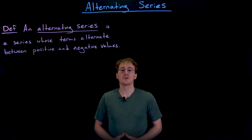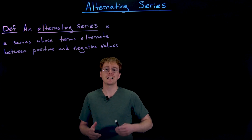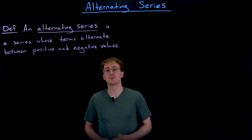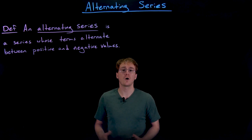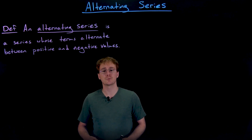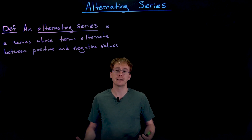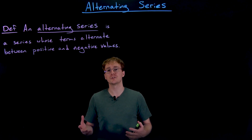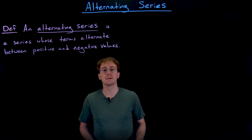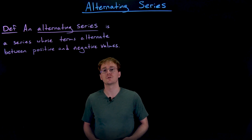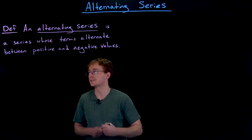It doesn't matter if that first term of an alternating series is positive or negative — all that really matters is that as we go between the terms, the signs are switching. Most of the examples we're going to work with are going to be pure alternating series where we always switch between positive and negative values. However, a lot of the results do not depend on this pure alternation; as long as we eventually become an alternating series, a lot of these results will still apply.